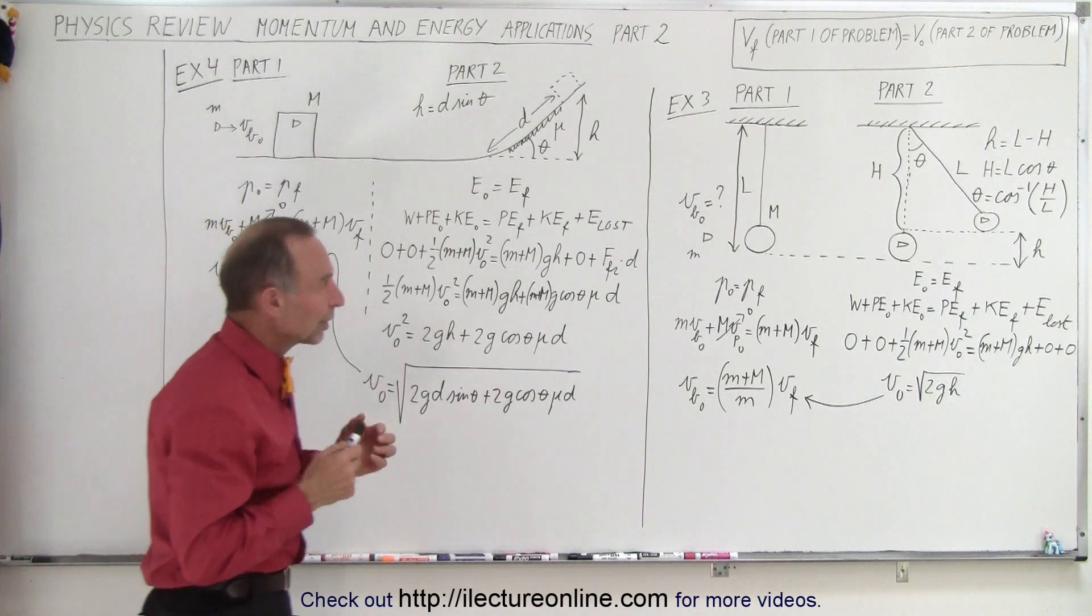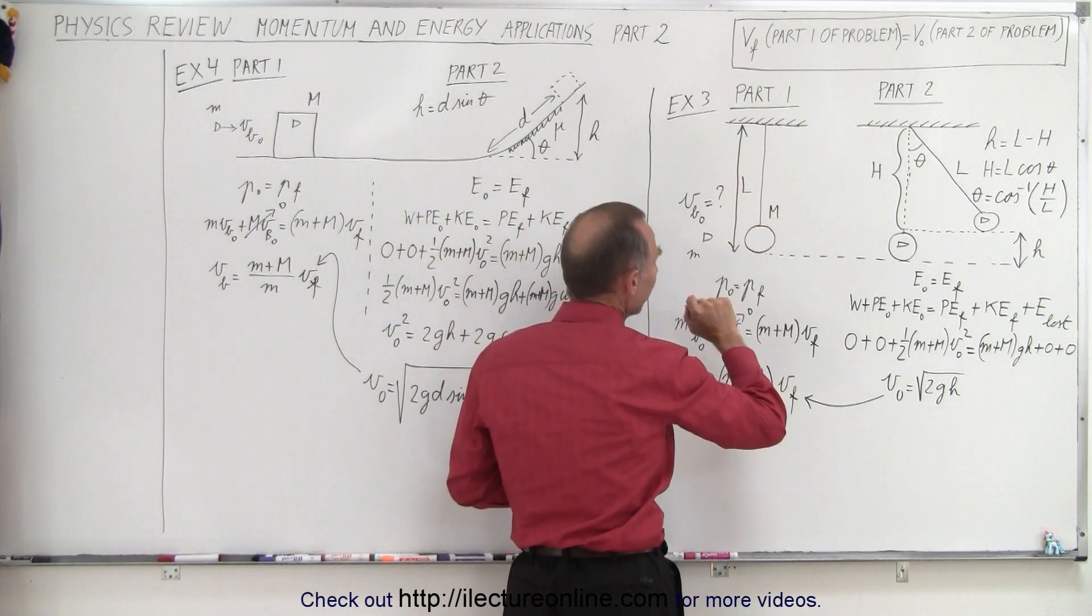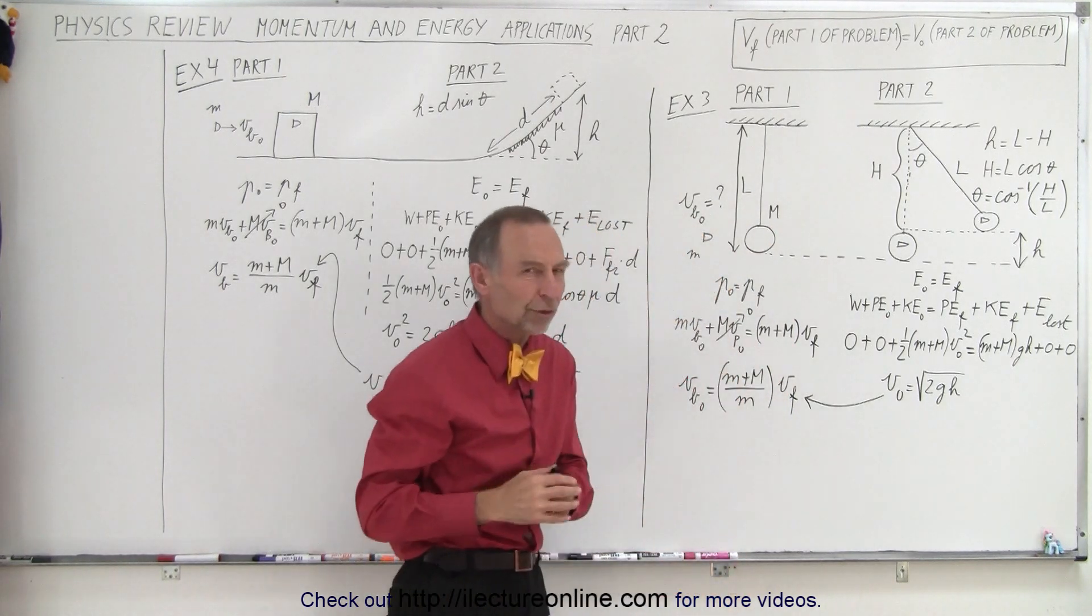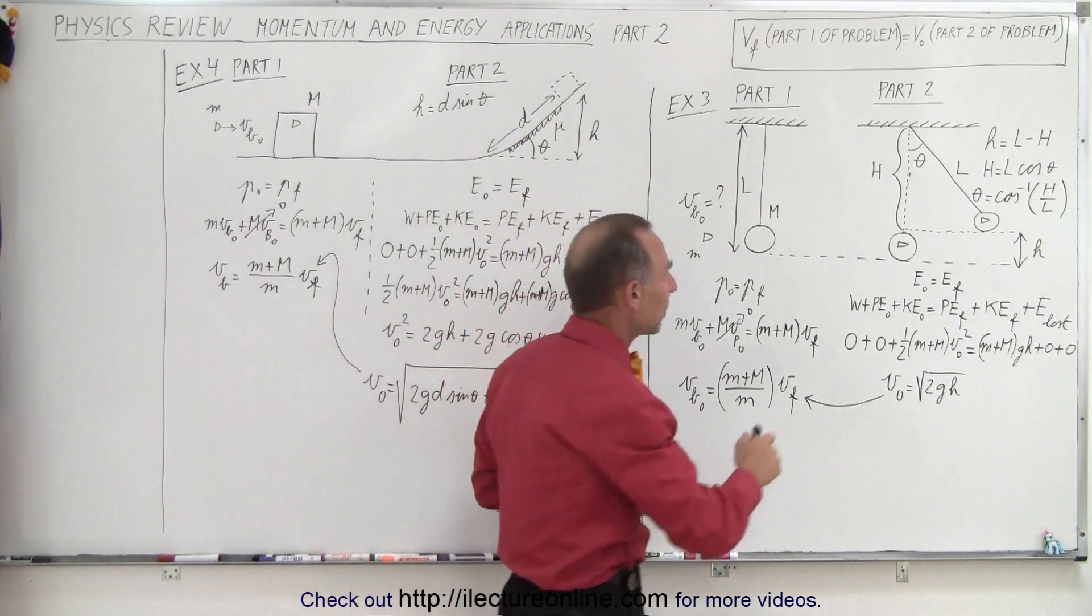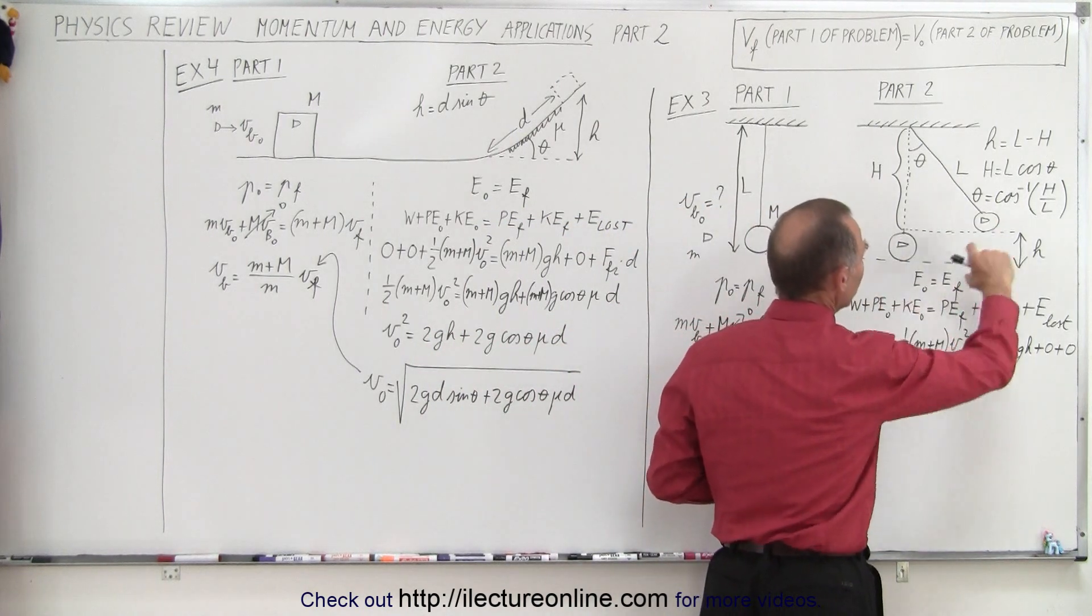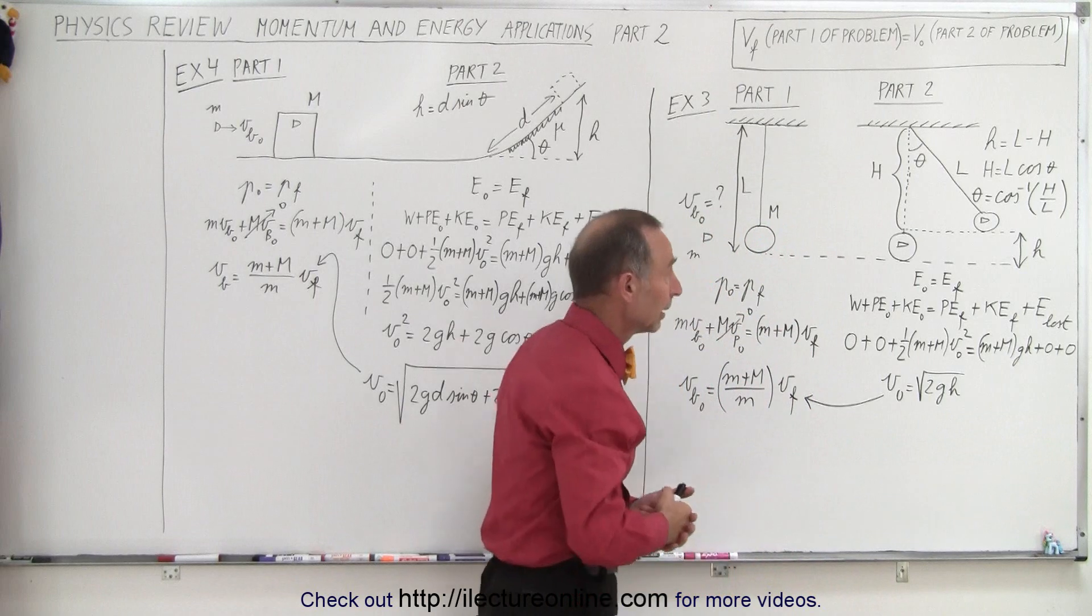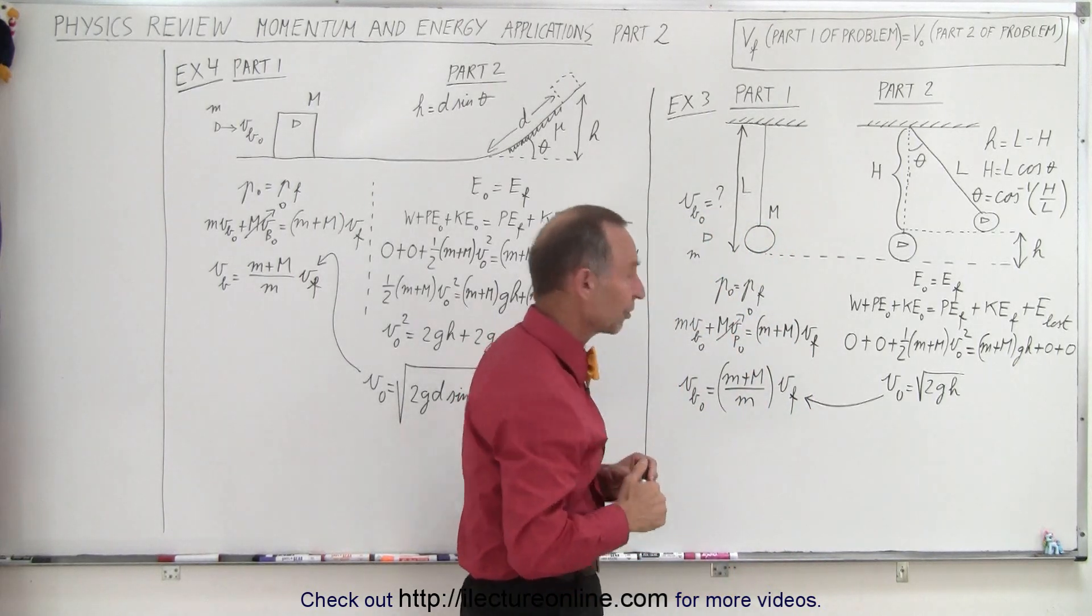Here on the third example, we have a pendulum which is hanging down of length L, mass big M for the pendulum, we have a bullet with a small mass m, and some initial velocity which is unknown, and we're trying to figure that out. The bullet will hit the pendulum, become embedded within the pendulum, and the pendulum will swing up to a certain height or at a particular angle. They can give you one or the other. Now, the question is, based on that information, what was the initial velocity of the bullet?